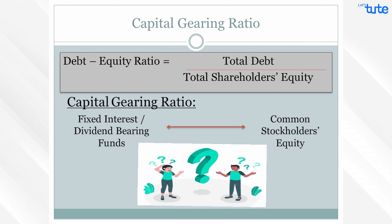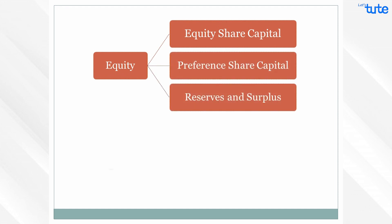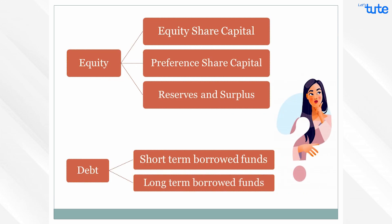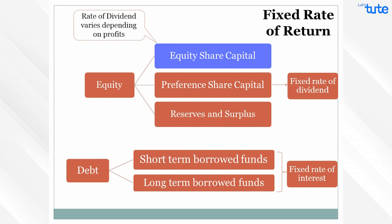So what are fixed interest or dividend bearing funds and common stockholders' equity? As discussed in our previous debt ratios, equity includes equity share capital, preference share capital, and reserves and surplus. Debt includes short-term as well as long-term interest bearing funds. The segment that gets a fixed rate of return is preference share capital — as they have a fixed rate of dividend — and borrowed funds, to which the company has to pay a fixed interest rate. But equity shareholders may or may not get dividends, and the rate of return varies year to year depending upon profits.